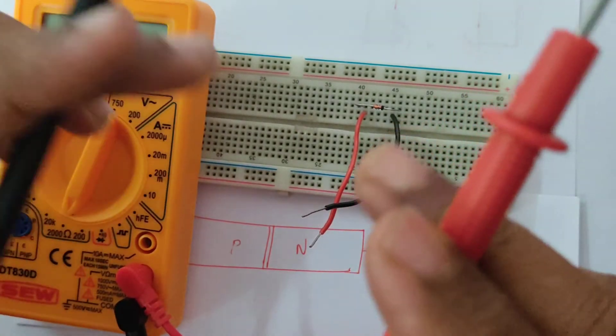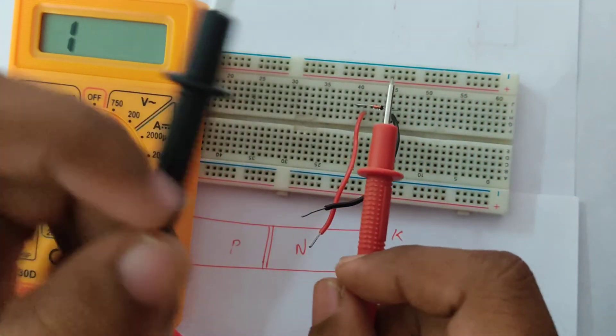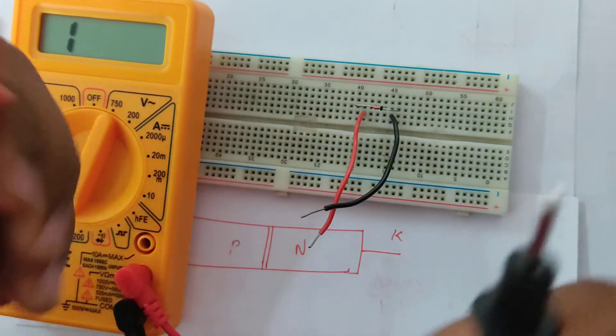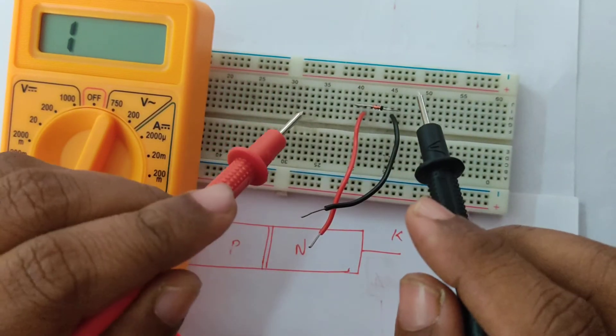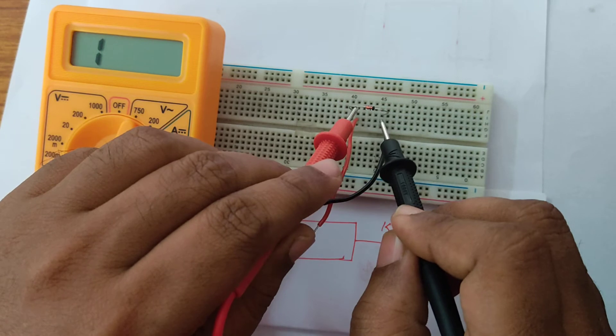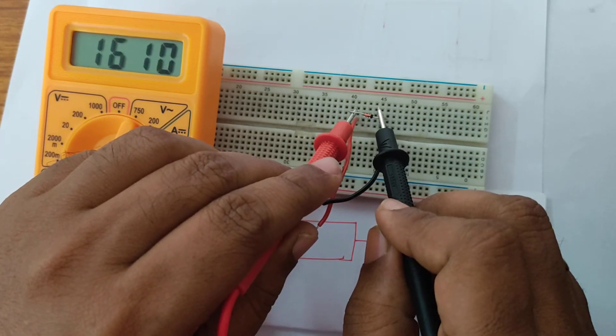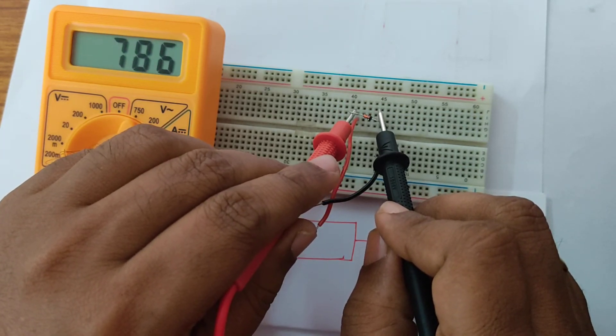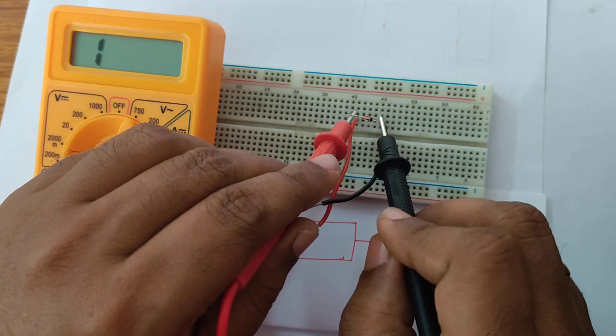Now, as usual, take the red knob, put it in the anode, take the black knob and put it in the cathode. Let us see the forward resistance. Red knob over here, black knob over here. So you can see, there is a resistance flowing through.